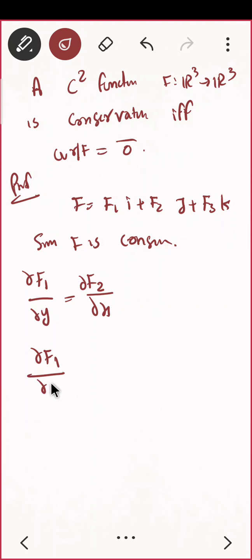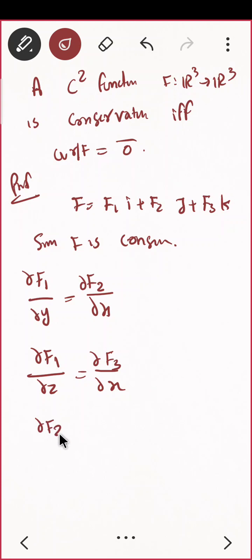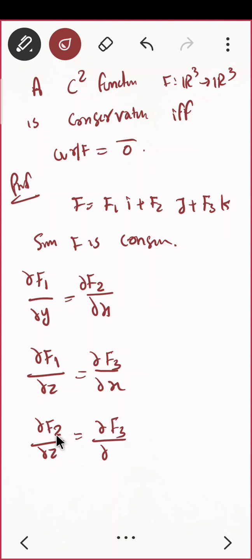Do you remember? The partial derivative of f1 with respect to z should equal the partial of f3 with respect to x. Similarly, the partial of f2 with respect to z. All the remaining conditions repeat for f1 and f2 as well — all three must hold. This was the definition of conservative.